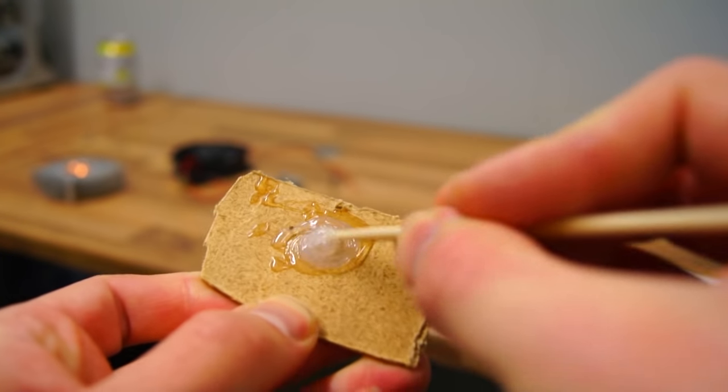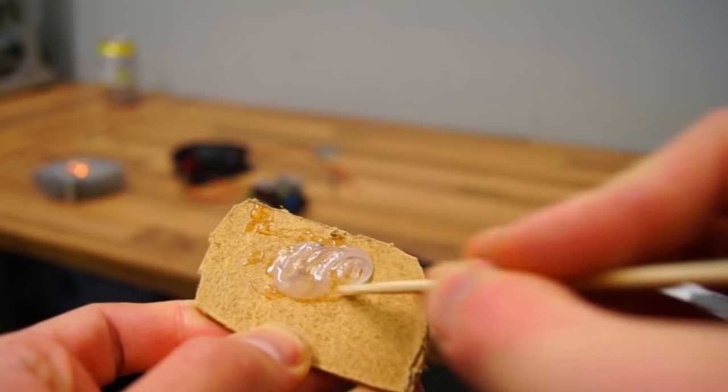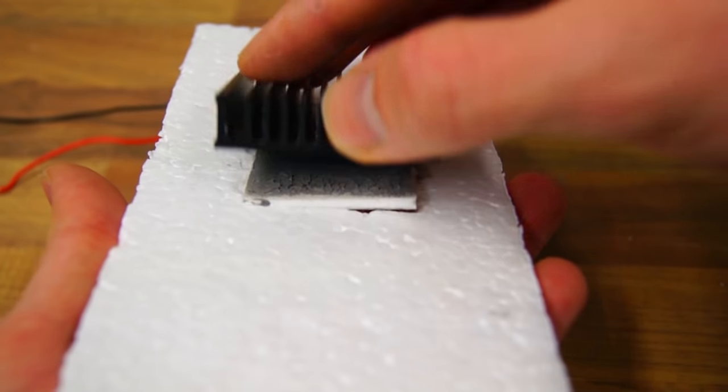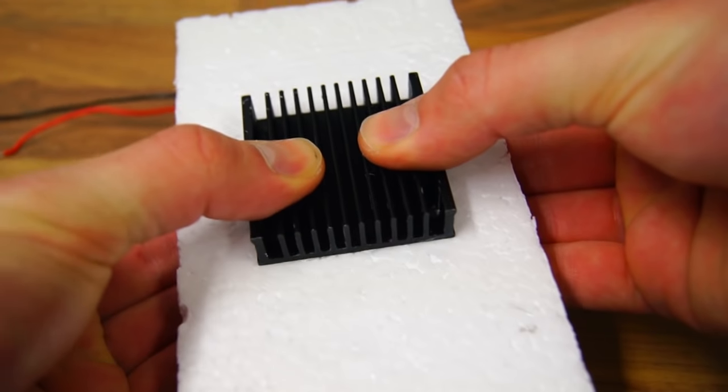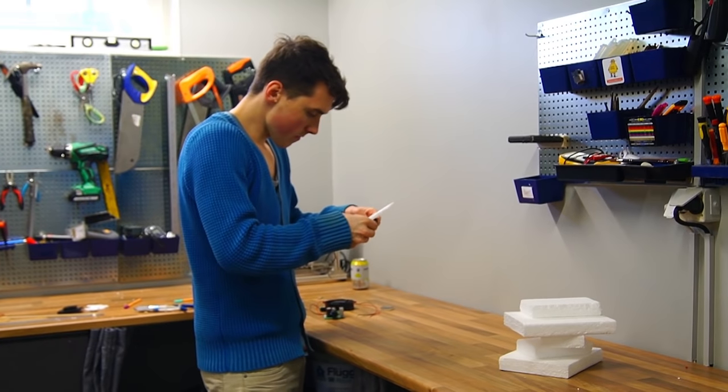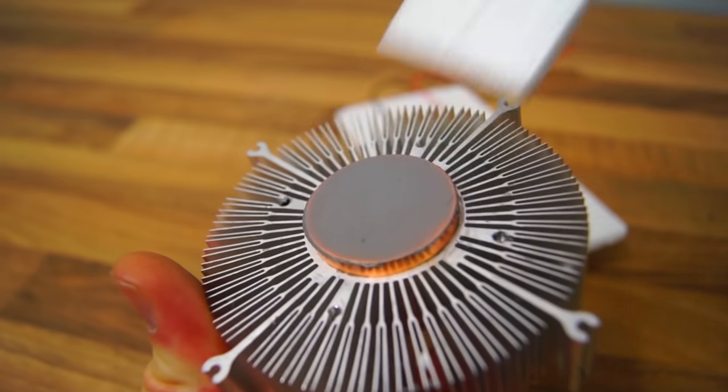I mixed up some two-part adhesive and smeared it out on the edges of the heat sink slightly larger than the Peltier module. I placed the heat sink over the Peltier and pushed them together. I did the same for the large heat sink.